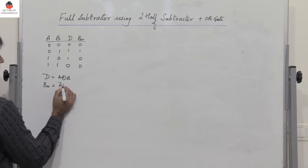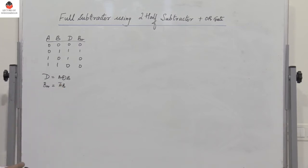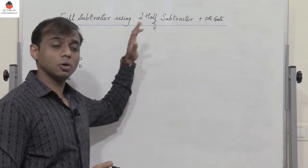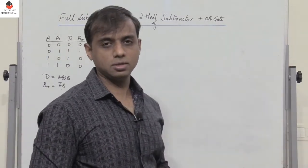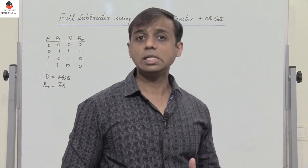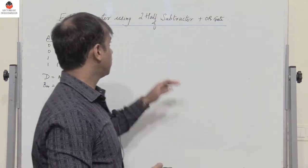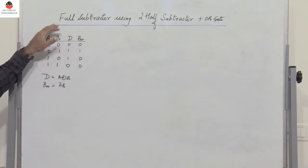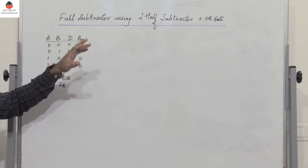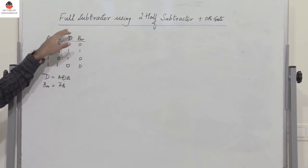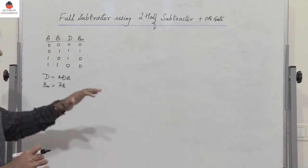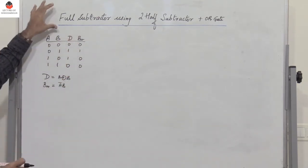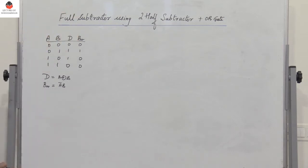So this is something you already know. The difference is nothing but A XOR B, and the borrow is A̅B. To view the implementation of a half subtractor or a full subtractor, check out the playlist 'Digital Electronics' where I have explained in detail the working and design of both using logic gates. Here we will only focus on how to implement a full subtractor using two half subtractors.